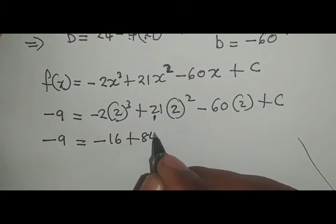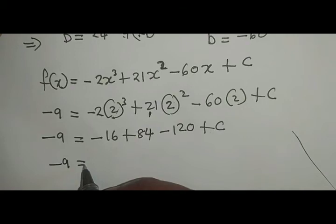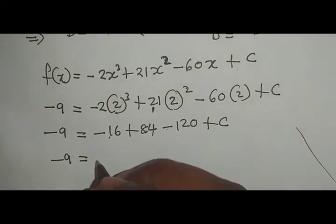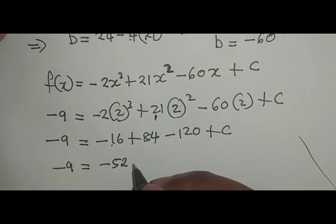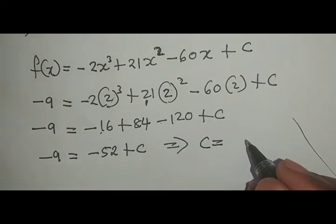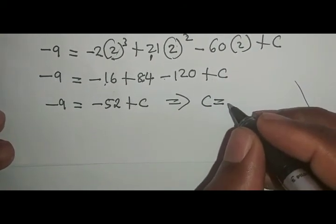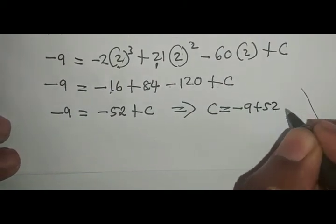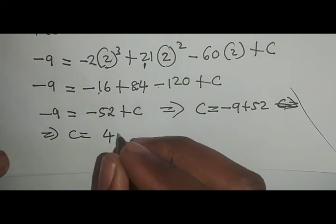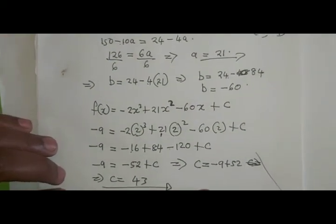-16 + 84 - 120 = -52, so -9 = -52 + c, which means c = -9 + 52 = 43. Therefore we have found the values: a = 21, b = -60, and c = 43. Thank you so much, God bless you.